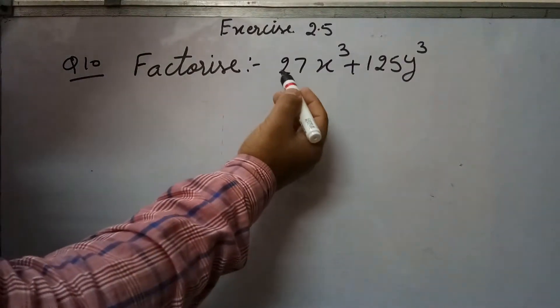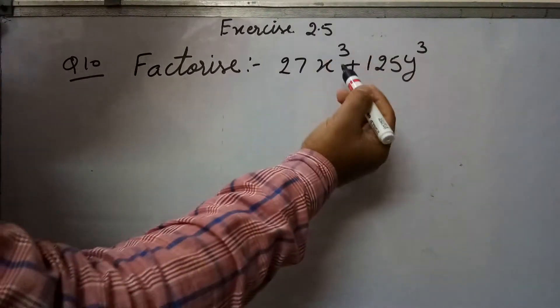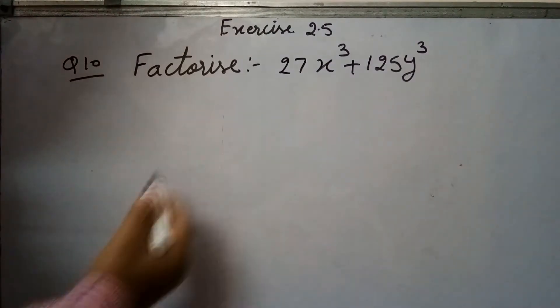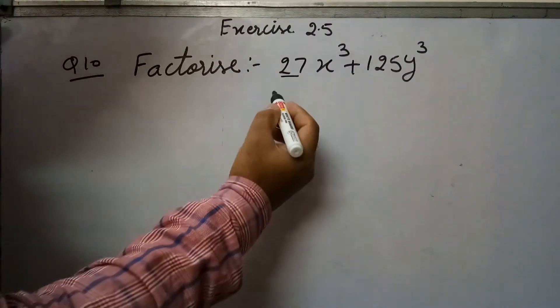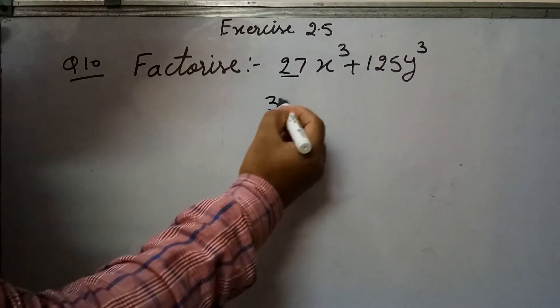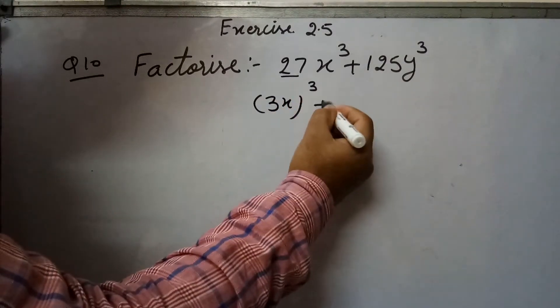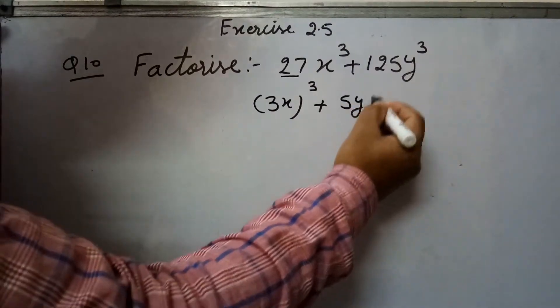So now this question is factorize 27x³ + 125y³. If you see here, this 27 is written as the cube of 3. So I will write this as (3x)³ and (5y)³.